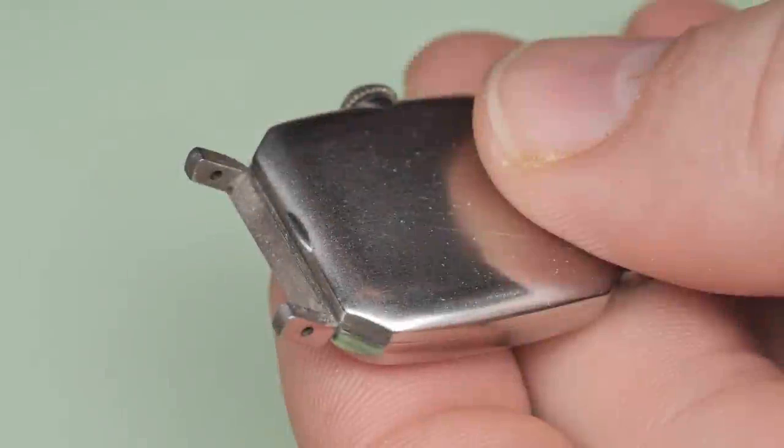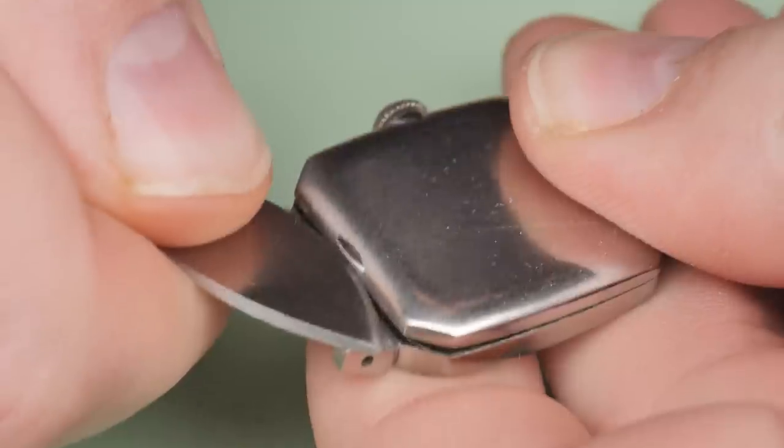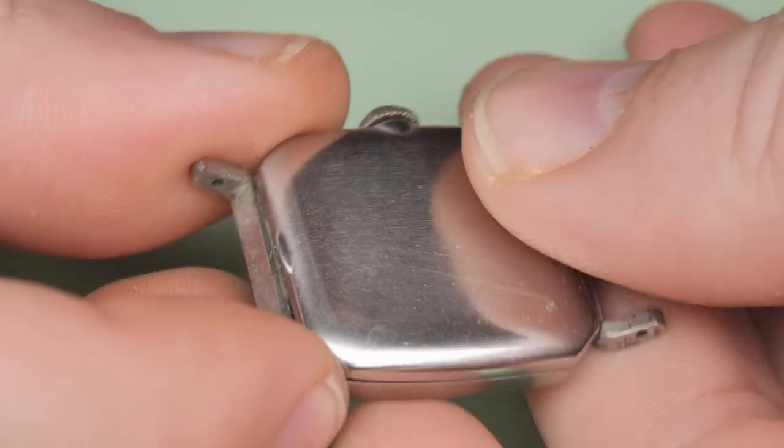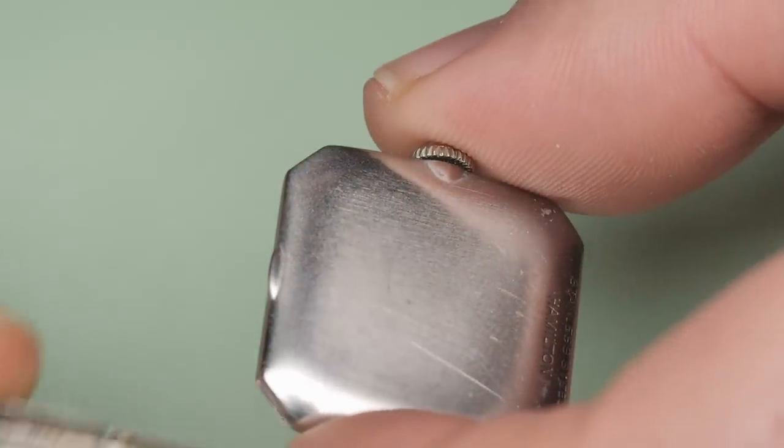The first step in any service is to remove the case back and get at the movement. I'm lucky that this case back isn't scratched to high heaven with apprentice marks. Using the small tab and levering against the back of the lugs, the case back comes right off.